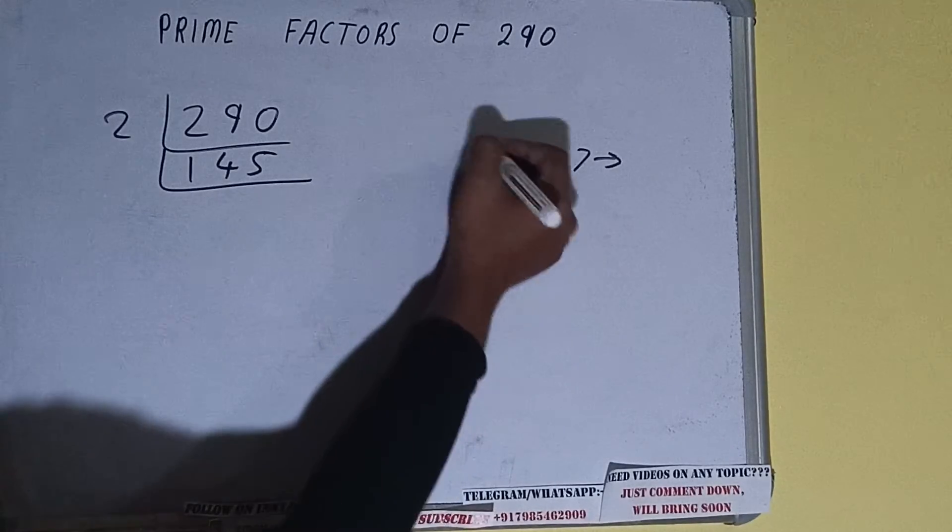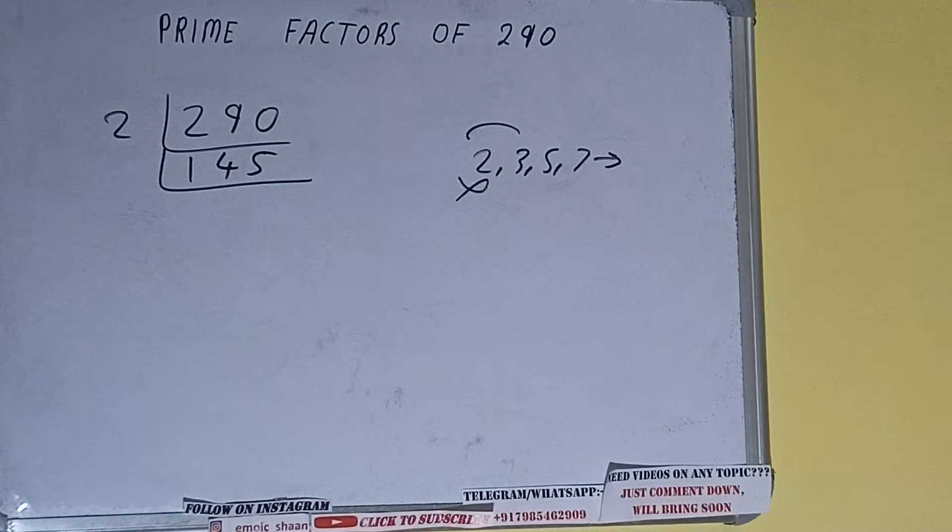So we'll check with the next lowest prime number, that is 3. 3 fours are 12, 25... it is not divisible by 3. Also, let's check with 5. The last digit is 5, so it is divisible by 5.